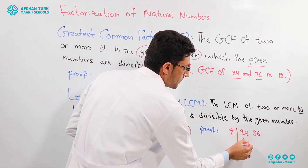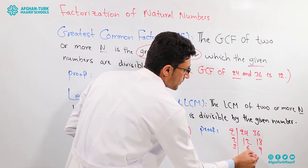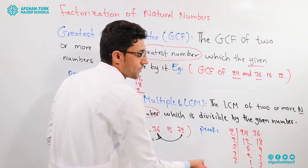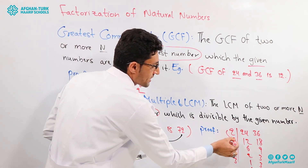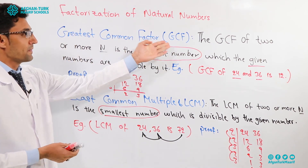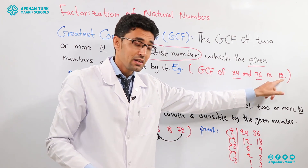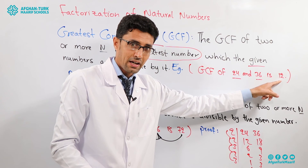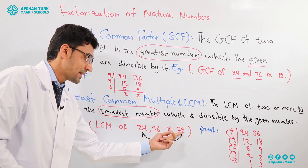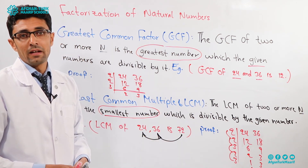To prove this, we factorize both numbers: we get 2 × 2 × 2 × 3 × 3 = 72. So in summary: the GCF is the greatest number that the given numbers are divisible by, while the LCM is the smallest number that is divisible by the given numbers. I am sure you now understand both LCM and GCF.